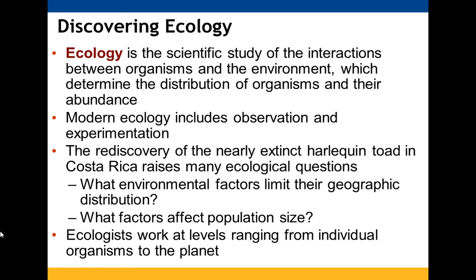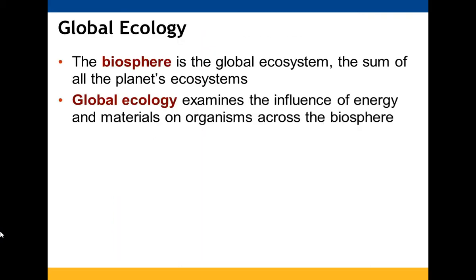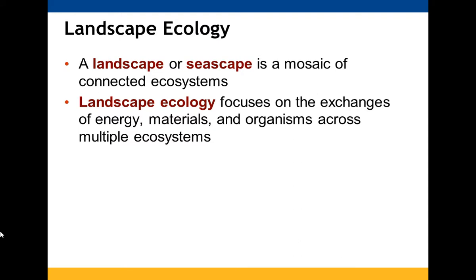Ecology is similar to what we've been doing throughout biology — you can look at it at all variety of levels, from individual organisms to the planet as a whole. We're going to talk about global, landscape, ecosystem, community, population, and organismal ecology. Global ecology deals with the biosphere, which is your global ecosystem — all ecosystems together. It examines how energy and materials influence organisms throughout the biosphere. Landscape ecology looks at connected ecosystems, a mosaic also known as a seascape or landscape, examining the interchange between energy, materials, and organisms between multiple ecosystems.